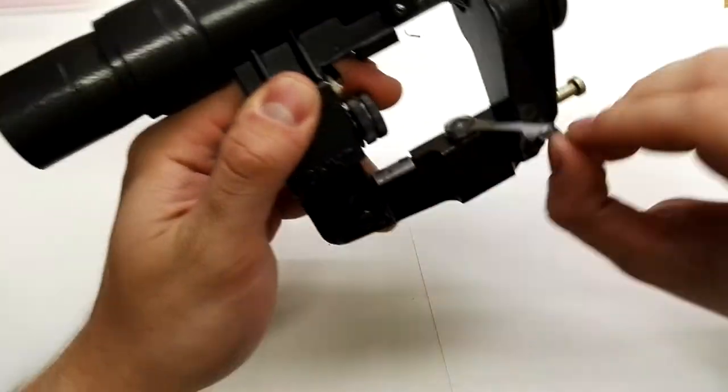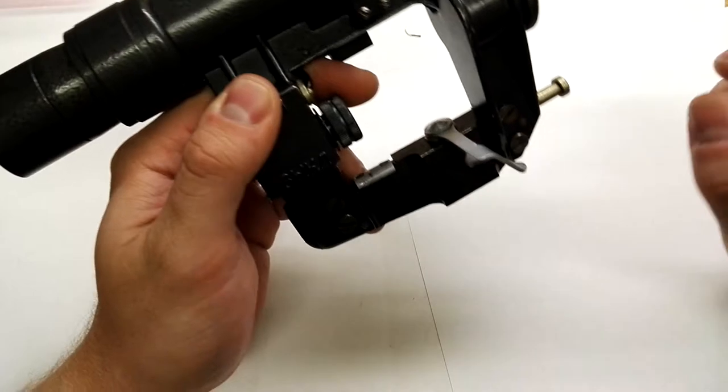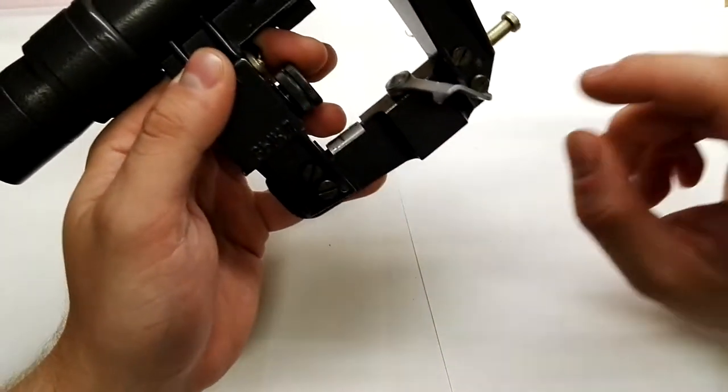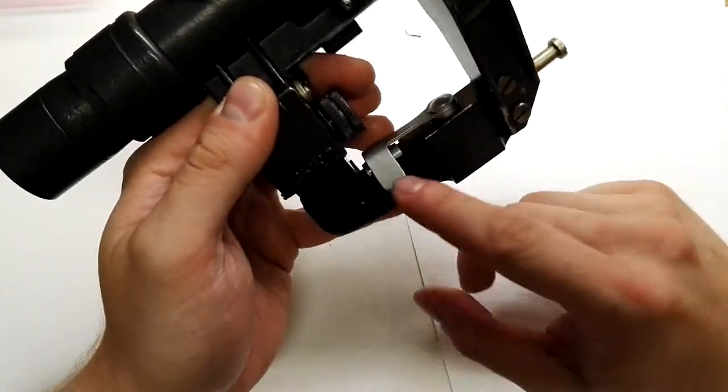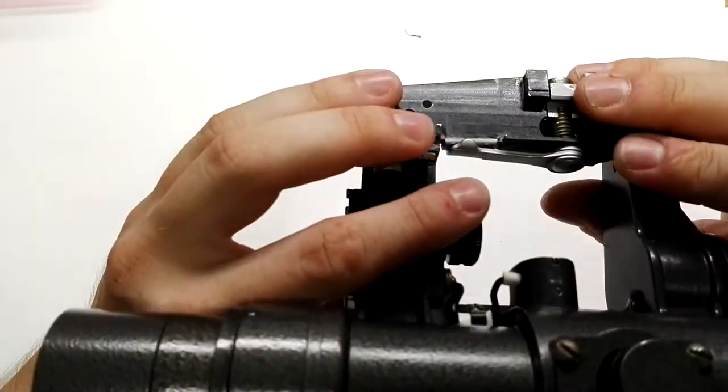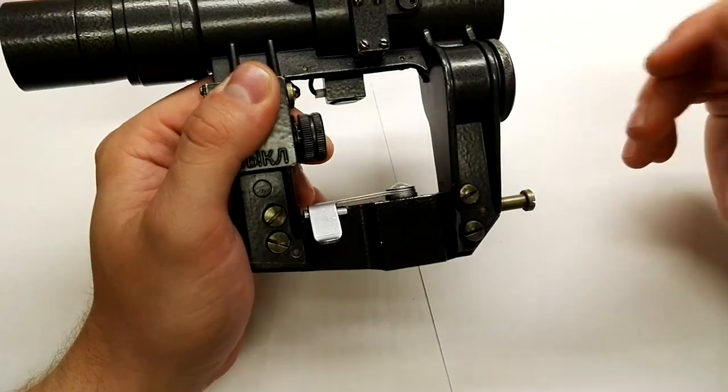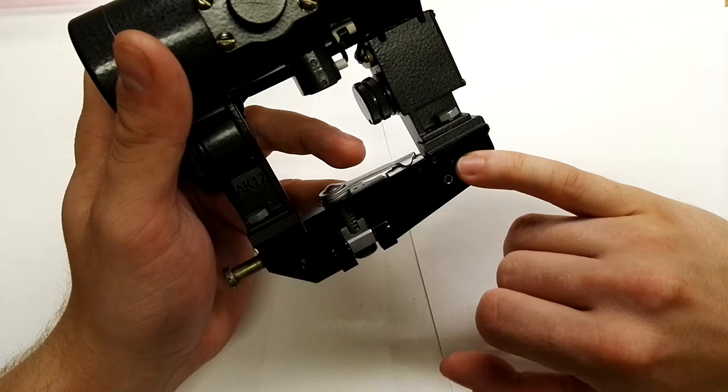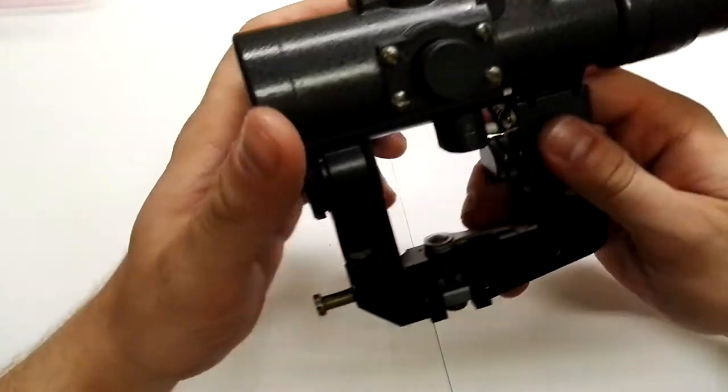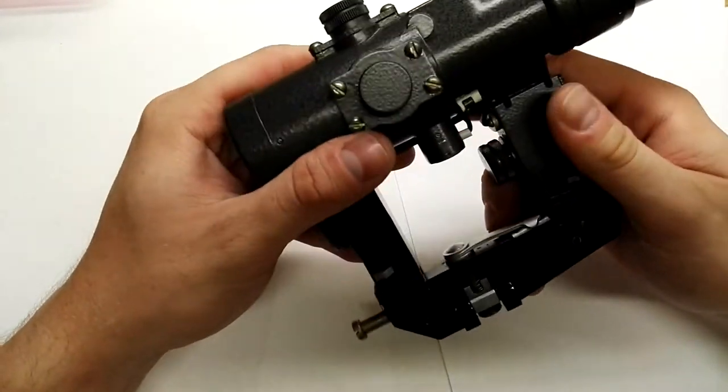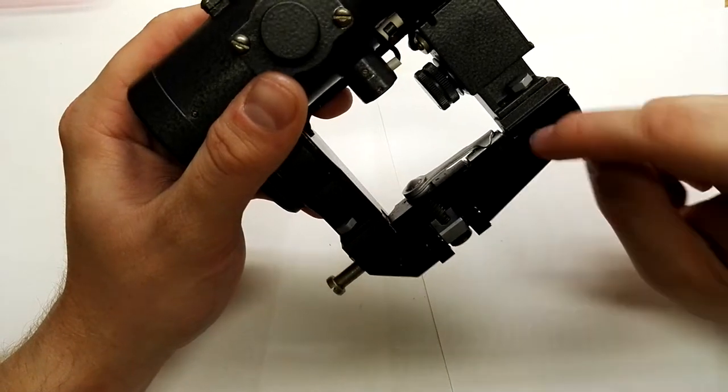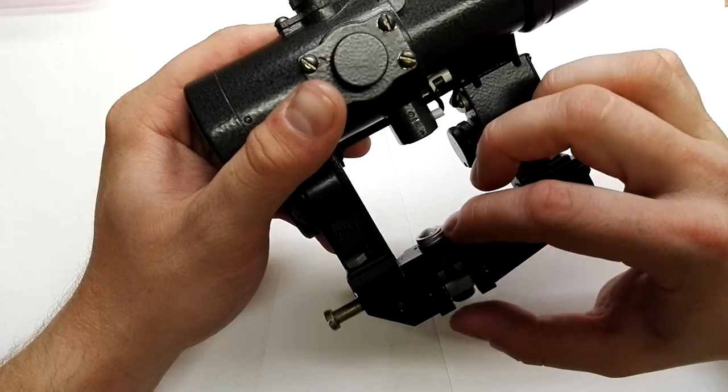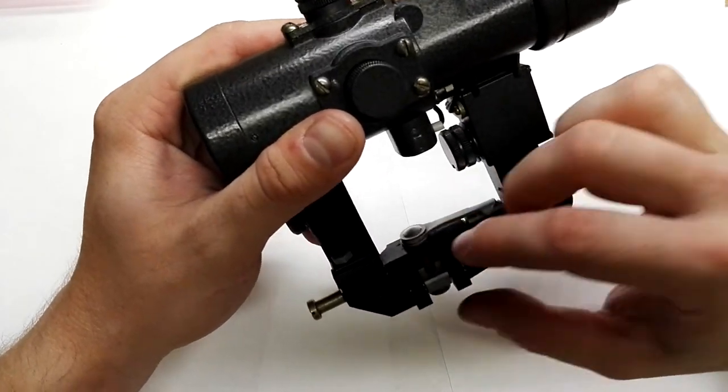This is the Saiga mount, probably - basically the basic AK mount. We also have the Tiger mount, which is the SVD type of mount. The difference is in the stopping - the Saiga mount has stopping in the back and the Tiger mount has stopping in the front.